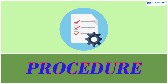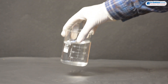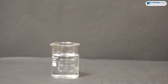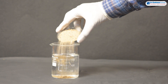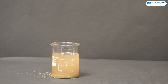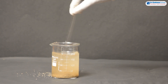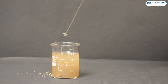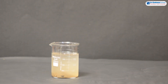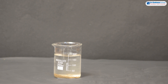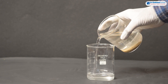Now it is time to see the procedure. Put some sand and water in a beaker. Stir the mixture with a glass rod. Allow the mixture to remain undisturbed for some time to settle. Heavier sand particles settle at the bottom. The clear water above is poured into another beaker.